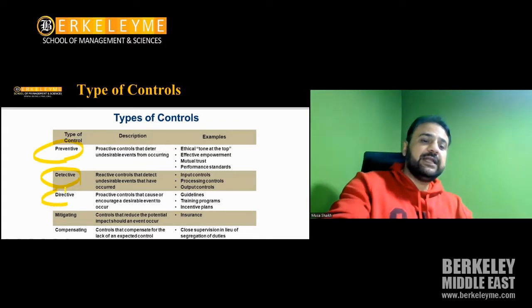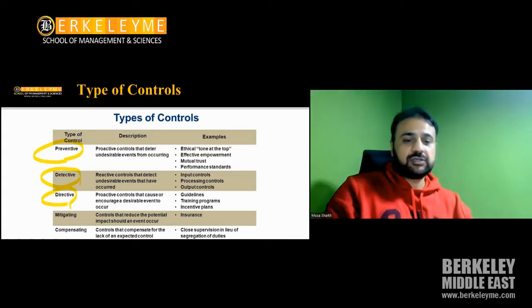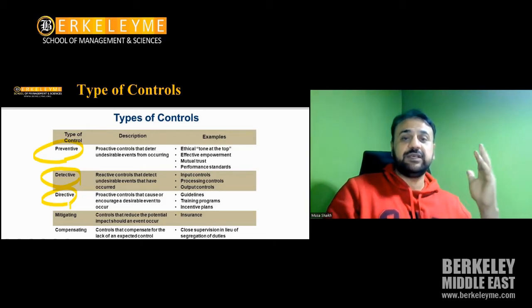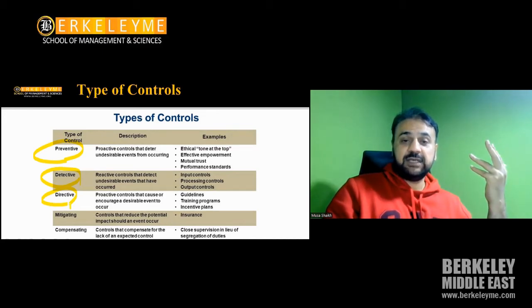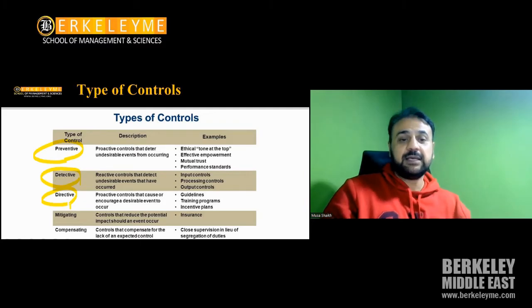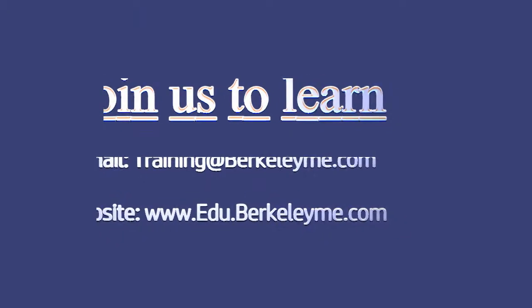The third type is directive controls. For example, your boss in the company might tell you to go and pursue your CMA qualification — because he himself is a CMA and understands the value of professional study. That is a directive control, where management gives direct guidance to employees.